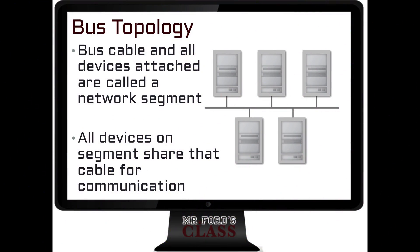All devices on the segment share the cable for communication. We are going to take a look at other videos on Ethernet and look at crashes and collisions. Right now I want to keep this at a fundamental level and get a basic understanding of what's going on. On a bus, all the devices on that specific segment are going to share that cable for communication.